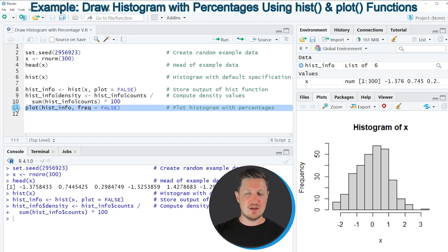So if you run line 11 of the code our plot is updated. And as you can see this time the histogram is shown with percentages on the y-axis instead of frequencies.